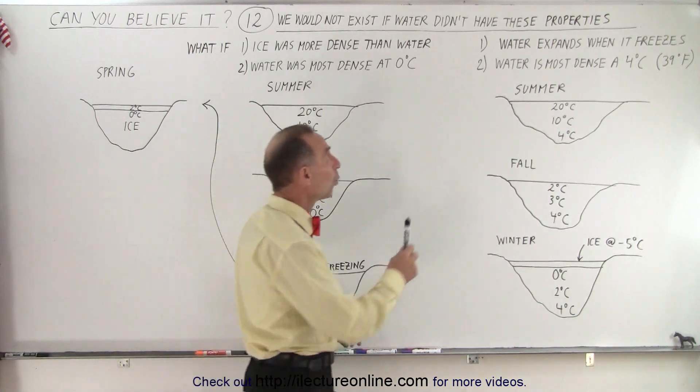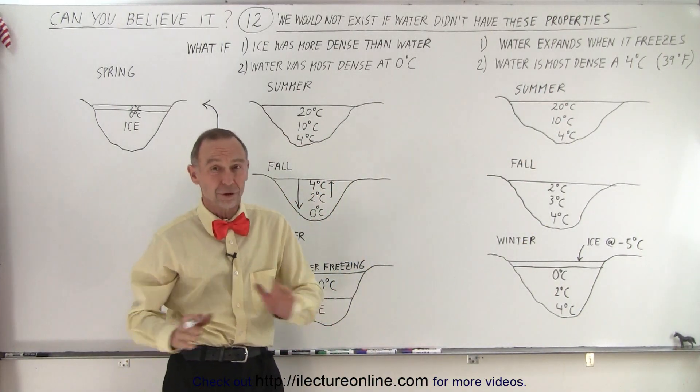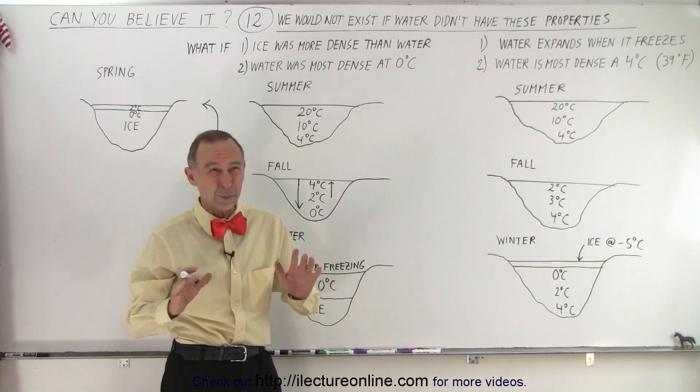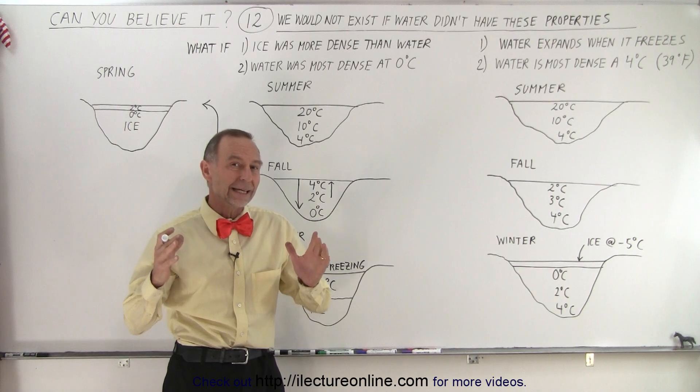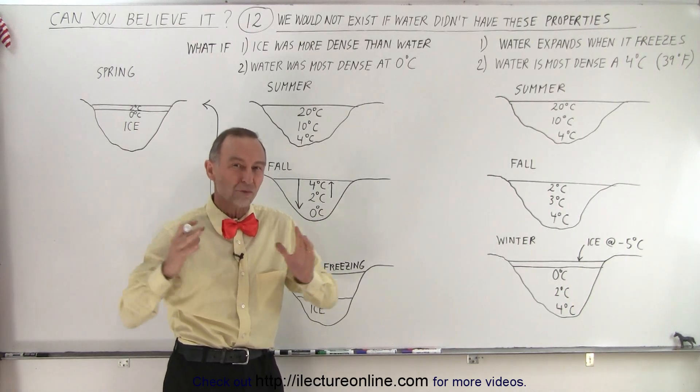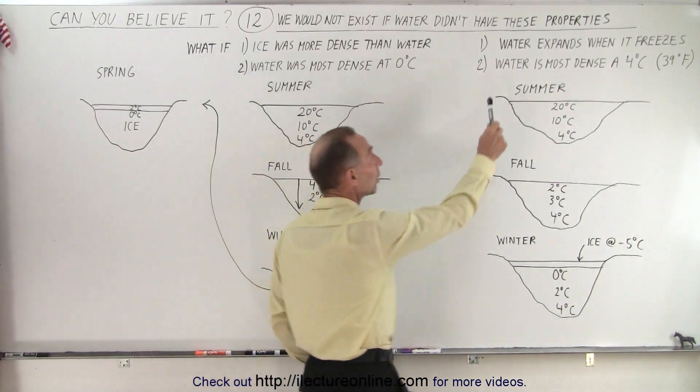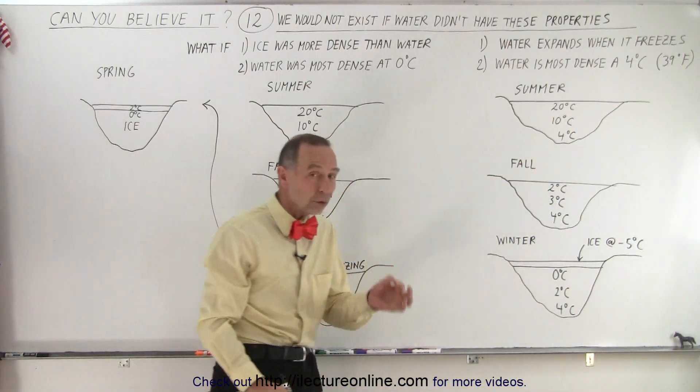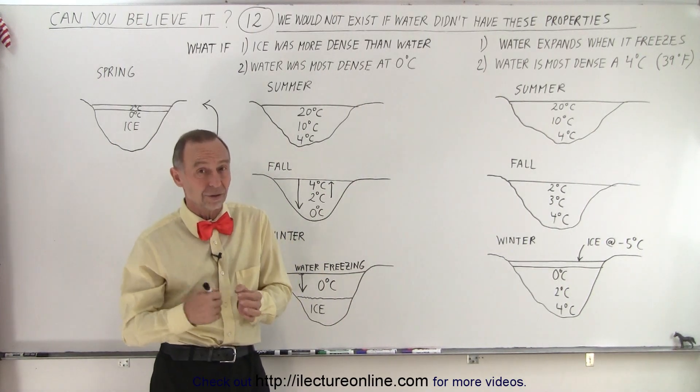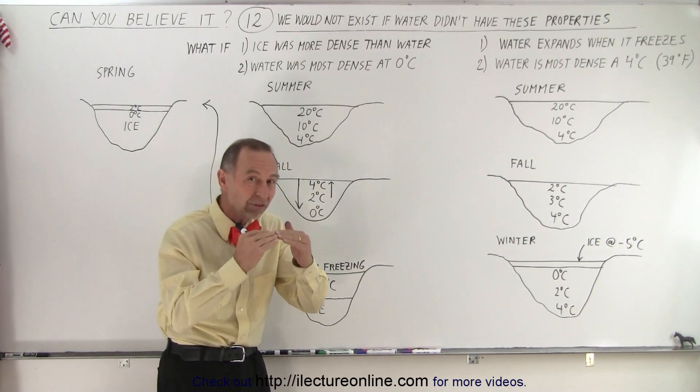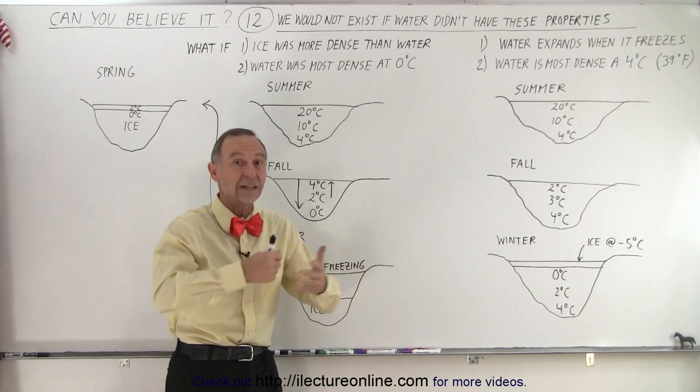First of all, water expands when it freezes. That's extremely unique. Virtually everything else, there might be one exception somewhere, but just about everything else, when it freezes, it becomes more dense. It shrinks in size, becomes more dense. Secondly, water is most dense at four degrees centigrade, not at zero degrees centigrade. It's less dense at zero degrees centigrade, and it's most dense at four degrees centigrade before it becomes less dense again as it gets warmer.